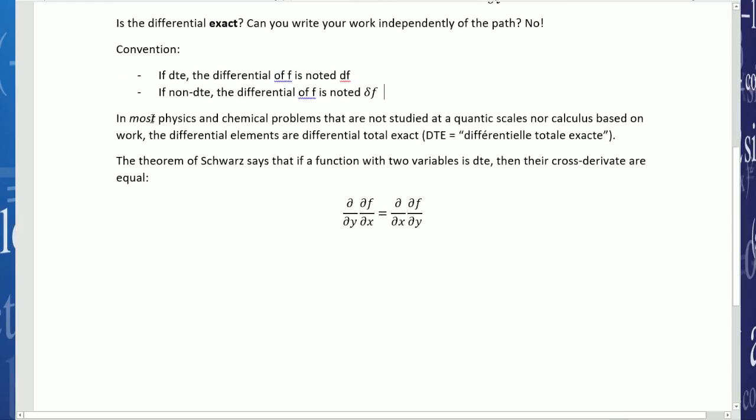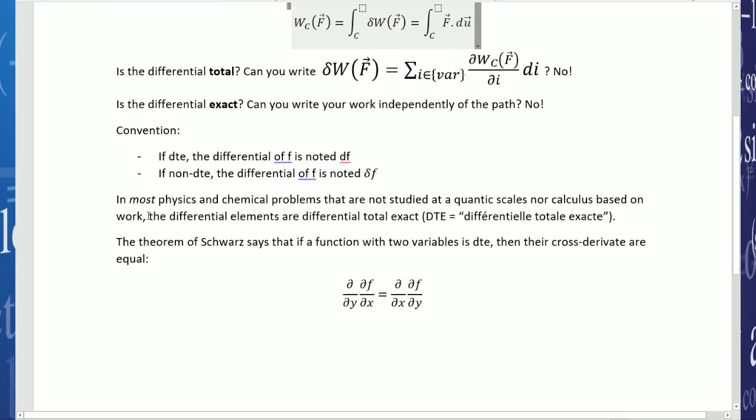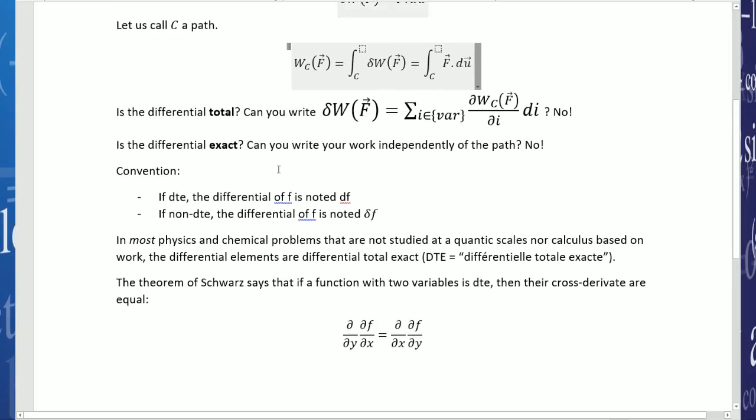In most physics and chemical problems that are not studied at a quantum scale nor calculus based on work, the differential elements are differential total exact, so DTE. This is true because of the continuity. Usually when you study physics systems, it's continuous. You are not going to have a function of mass that will increase to infinity or things like that. So in most things, it's a DTE.